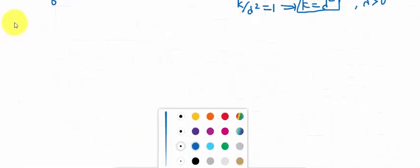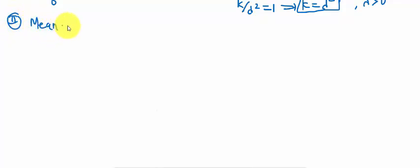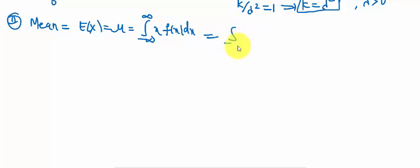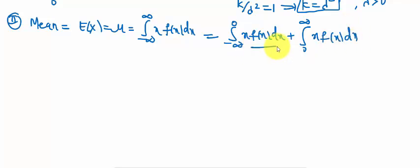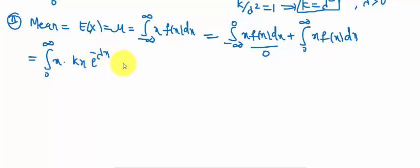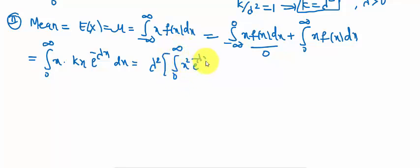Next, to find the mean. The mean formula is μ = E[X] = integral from minus infinity to infinity of x·f(x) dx. This splits as: integral from minus infinity to 0 of x·f(x) dx plus integral from 0 to infinity of x·f(x) dx. The first integral is 0. The second is: integral from 0 to infinity of x · kx·e^(-λx) dx. Since k = λ², this becomes λ² · integral from 0 to infinity of x²·e^(-λx) dx.